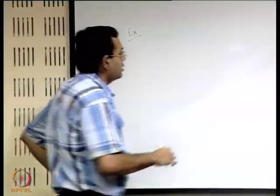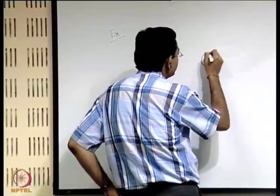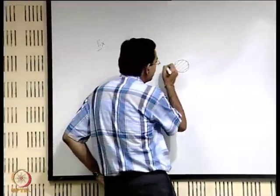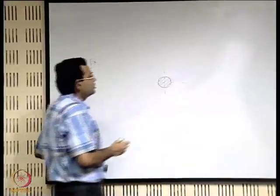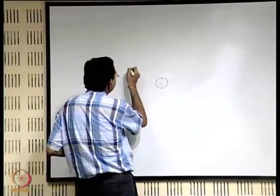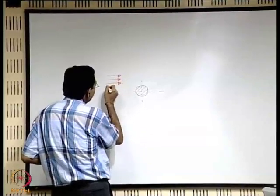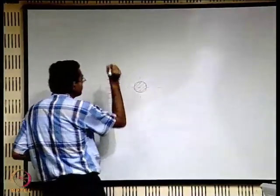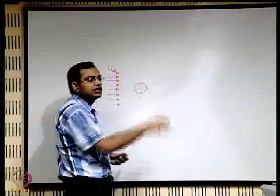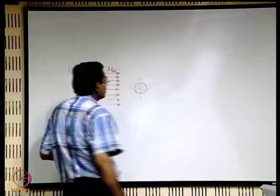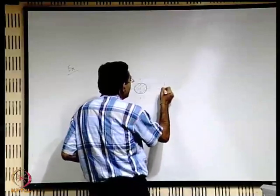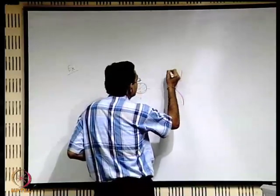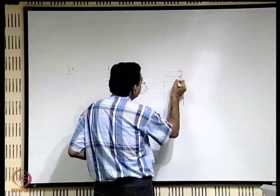Let us take an example where you have a solid body — say a solid body of circular shape — and fluid is flowing, coming from a free stream with a uniform velocity, say u-infinity. Because of the presence of the solid, the velocity is disturbed. If you go a little bit away from the solid and draw the velocity profile, the velocity profile varies in this way.